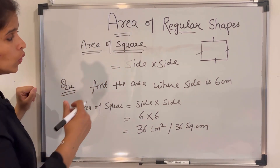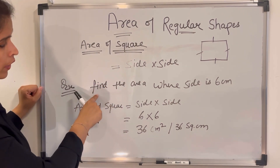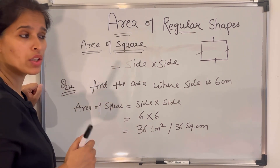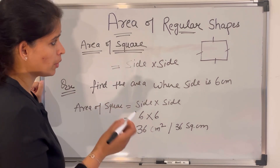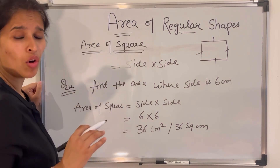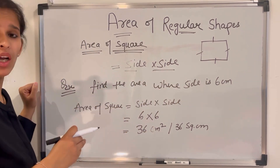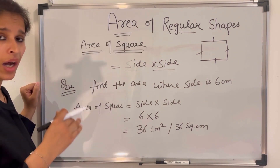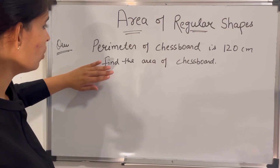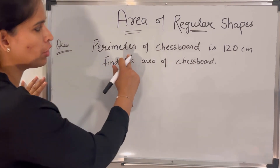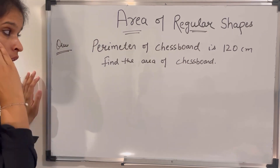This is the way we solve problems where the question asks us to find the area of a rectangle or a square, because these regular shapes have derived formulas. Now I have one question: the perimeter of a chessboard is 120 centimeters — find the area of the chessboard.